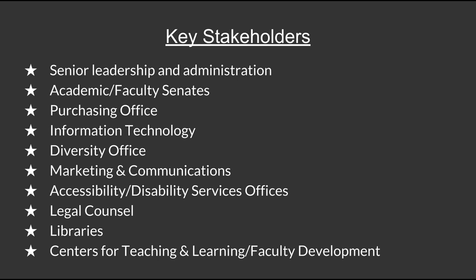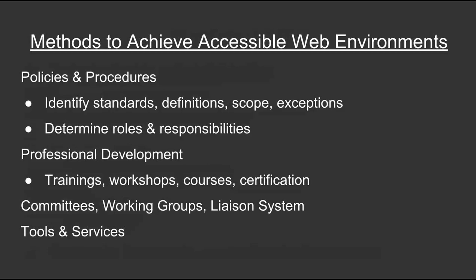Make sure these services are communicated so that students, visitors, and employees know these options are available. Centers for learning and teaching, distance learning, and faculty development offices could offer course reviews that incorporate accessibility, professional development, and how-tos for accessible course design. To really ingrain this, you could put some of these responsibilities into job descriptions. This emphasizes a shared approach with mechanisms and supports in place, fulfilled through policies and procedures that explicitly identify technical standards, definitions, scope, and exceptions — and identify roles and responsibilities for those various stakeholders.